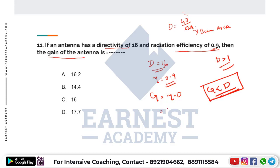In this particular problem, the answer is 0.9 multiplied by 16. Now there are options here — we multiply this way.